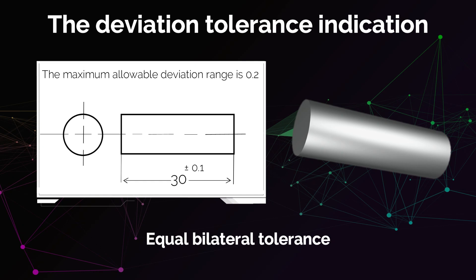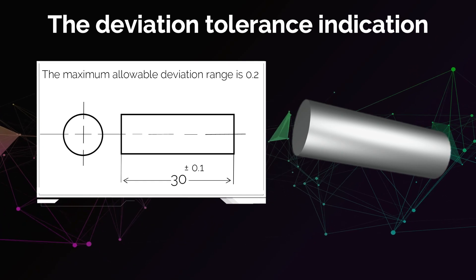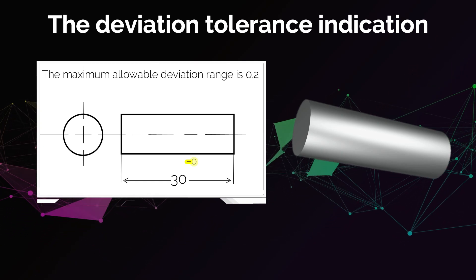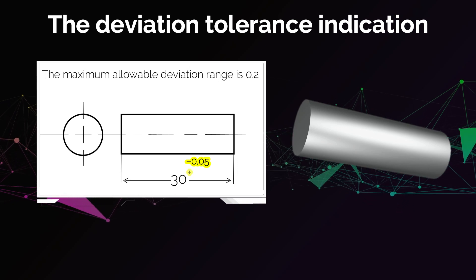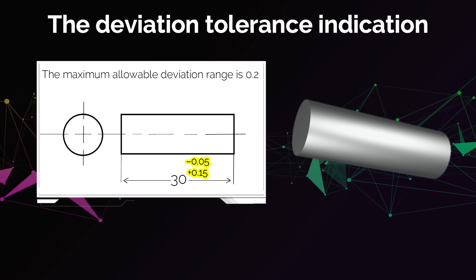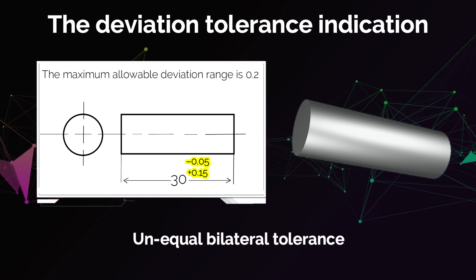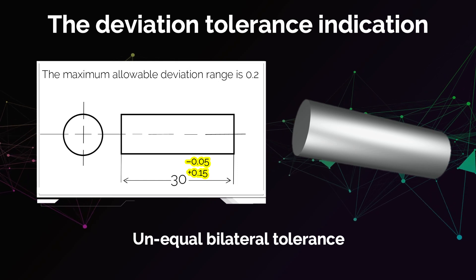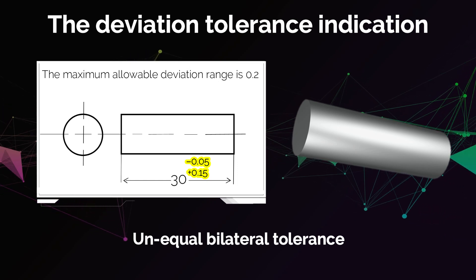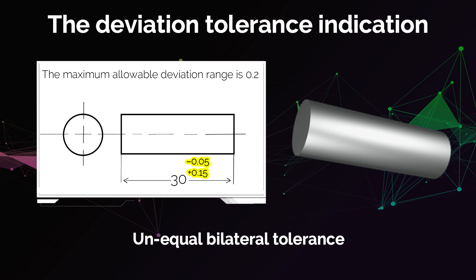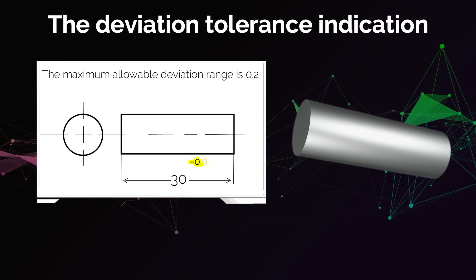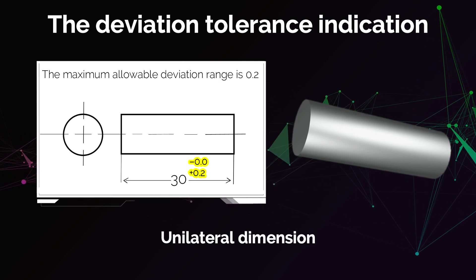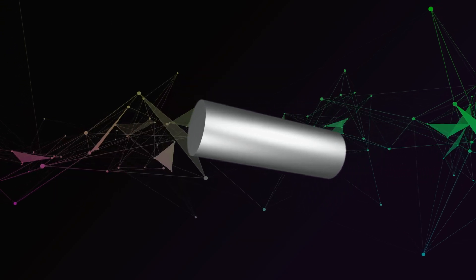There are some cases where deviation is allowed in both the negative and positive directions but with different values — for example, 30 −0.05 +0.15. In this case it is called an unequal bilateral tolerance. In other cases, deviation is allowed in only one direction — for example, 30 −0.0 +0.2. This is called a unilateral tolerance.